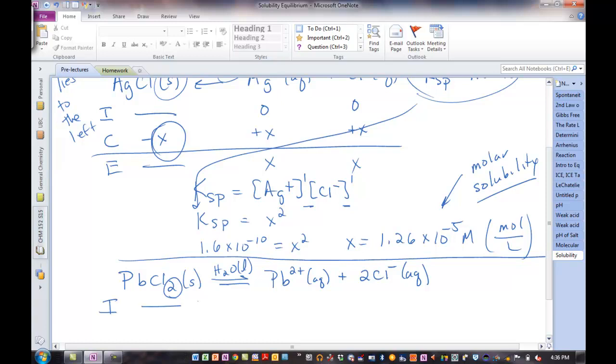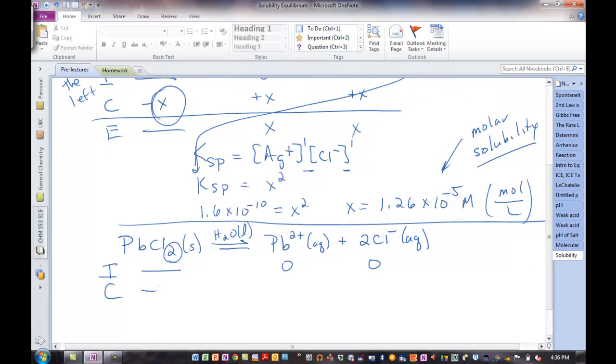So when we set up our ice table, the amount of salt that dissolves is x. One to one ratio, we're going to get x of lead cations. But what about chloride? Yeah, exactly, 2x. We have to use this coefficient. So when we set this up, don't worry about the solid, don't worry about the liquid. We have x and 2x.